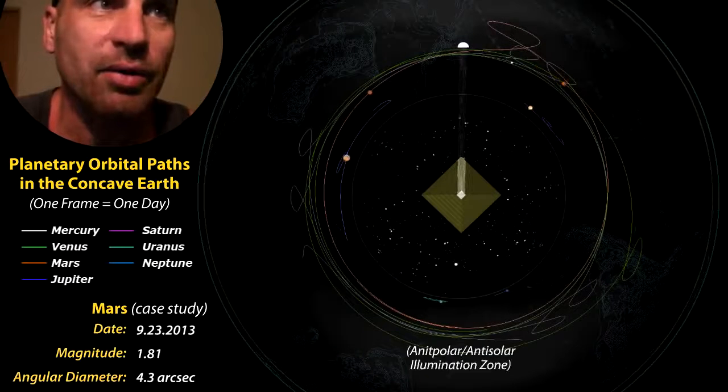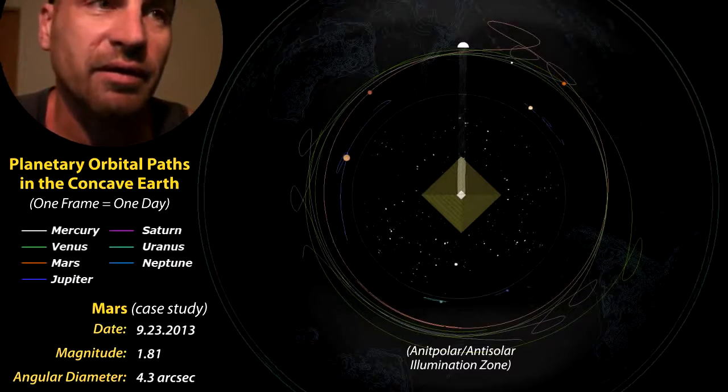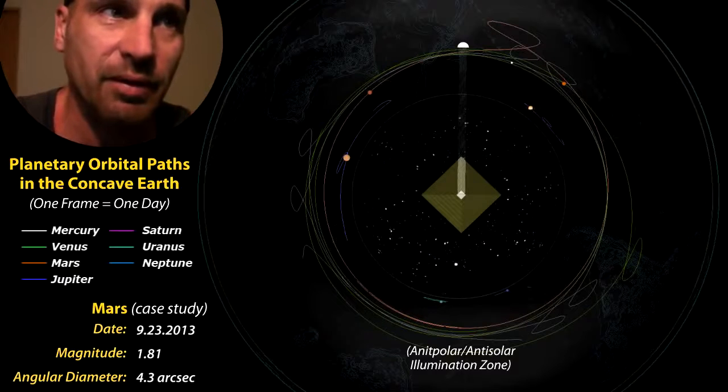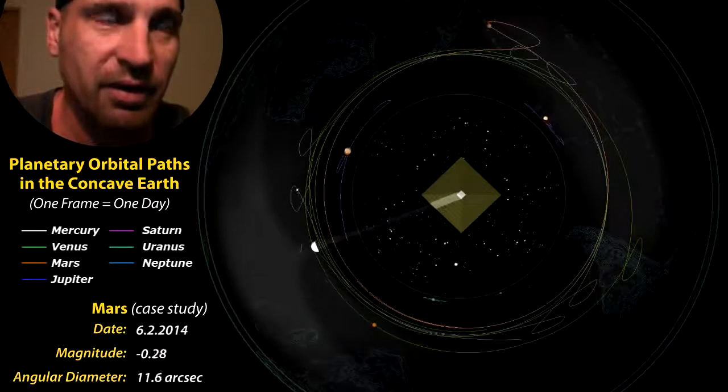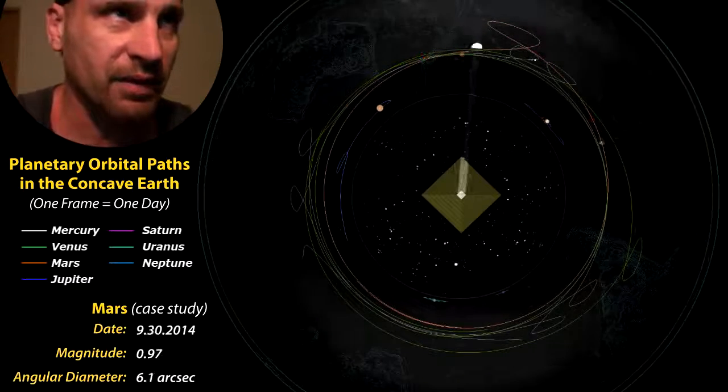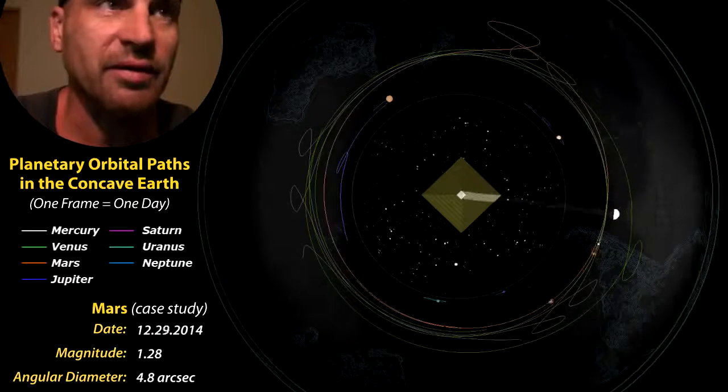There is an anti-polar, anti-solar illumination zone opposite the Sun. That's how we get full moons because the sunlight is bending around the other side of the Earth. It's using the glass sky to curve around like that and it meets it. It converges there. That's how we get lunar eclipses too.